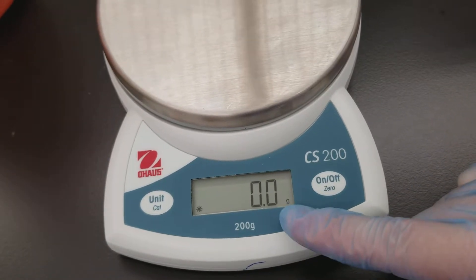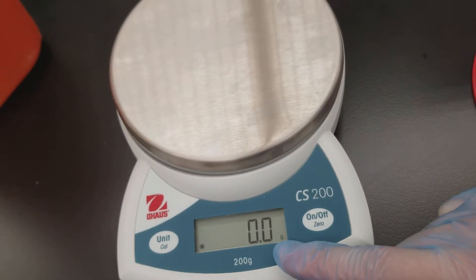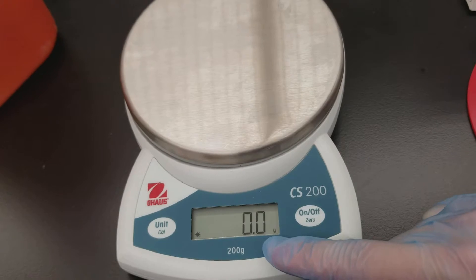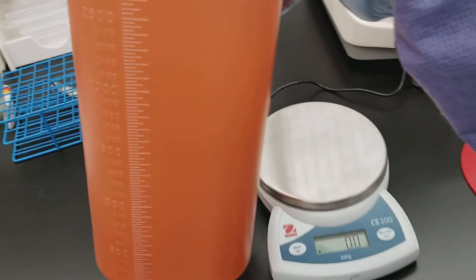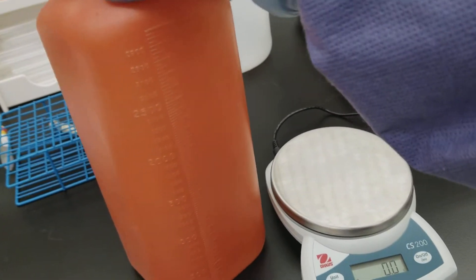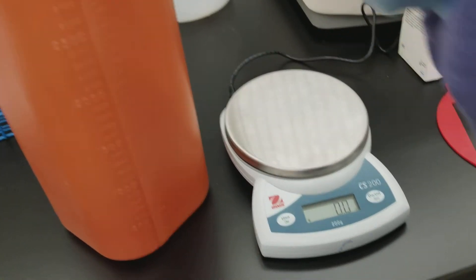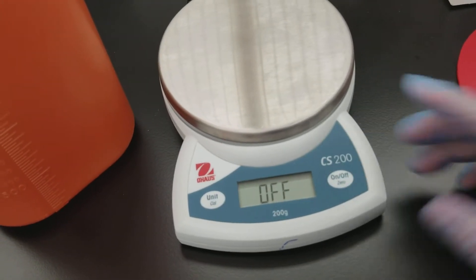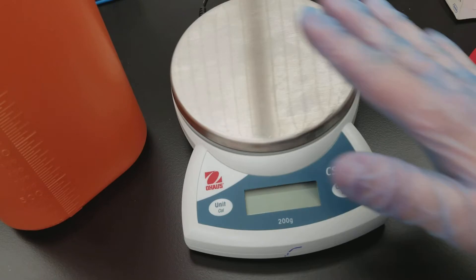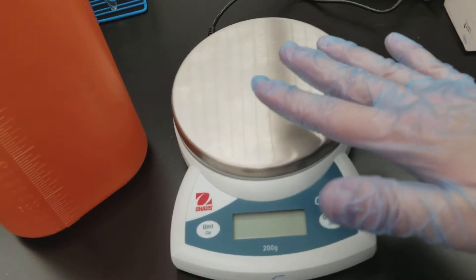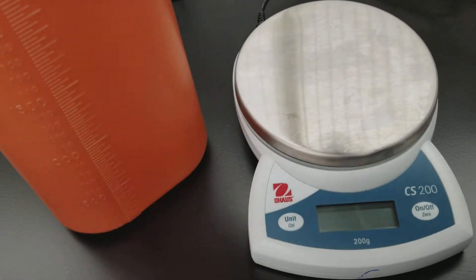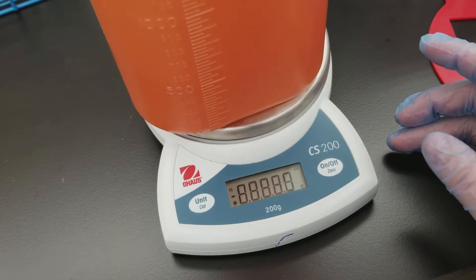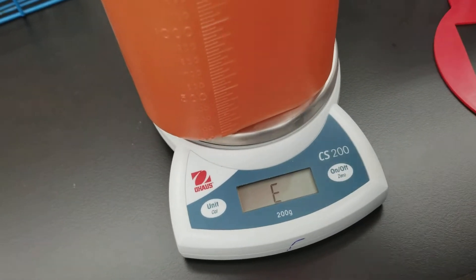So notice that naturally, with it turned on, it automatically tares, which means it zeros itself. A great thing to do if you get a lot of 24-hour urines is a lot of places will have an empty 24-hour urine jug. And so when they go to turn the scale on to automatically tare it, they just put the empty jug on there and turn it on. And this one weighs more than 200.